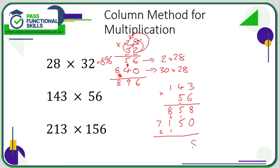Now let's do the adding up. 8 plus 0 is 8. 5 plus 5 is 10 — 0 carry 1. We're just adding the top and bottom line, so it might be easier to cross off the carry digits so we don't get confused. 8 plus 1 plus 1 is 10 — 0 carry 1. 7 plus 1 is 8. So the answer is 8008.